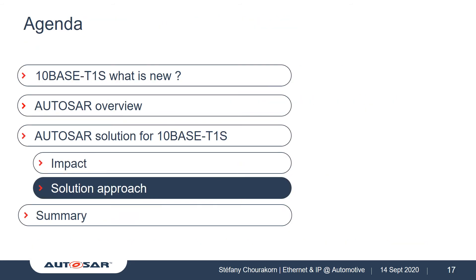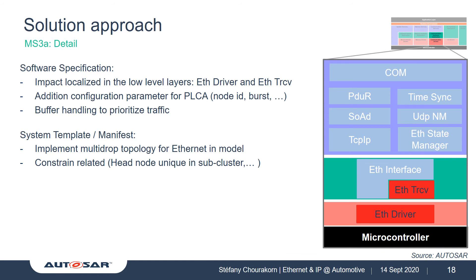Now that we identified which specifications and working groups are affected, let's look at our solution for the November release. In the detailing part of our concept, we localized the main modifications on the driver layer of the communication stack. The main changes in the Ethernet transceiver will be the introduction of PLCA configuration parameters. Due to possible transmission latencies induced by the combination of transmit opportunities and lower data rate, we also specified on the Ethernet driver an optional buffer handling to prioritize traffic. On the system template, the coupling elements defined in the topology will be extended to support multidrop connections. Additionally, constraints need to be added — such as the head node responsible for beacon transmission shall remain unique within the multidrop subcluster.